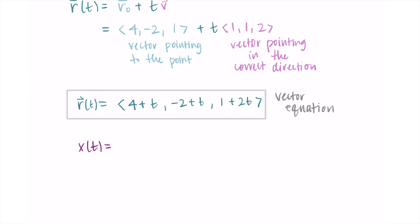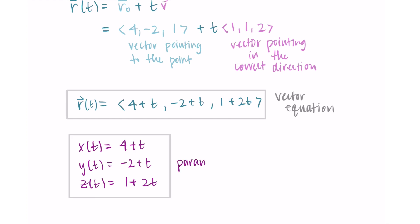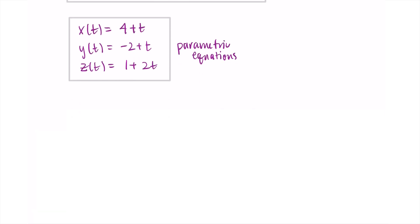We can also write these as parametric equations by taking individual components: x(t) = 4 + t, y(t) = -2 + t, and z(t) = 1 + 2t. Thinking of t as time makes sense — it's what draws out the line in three-dimensional space.